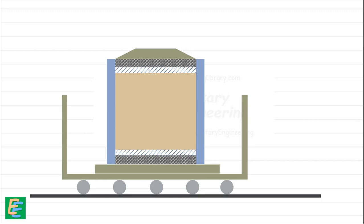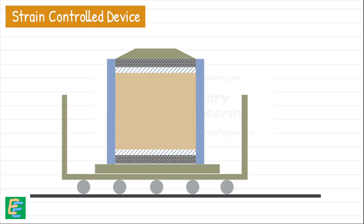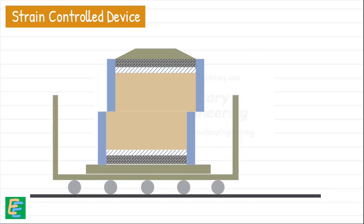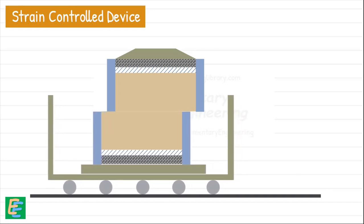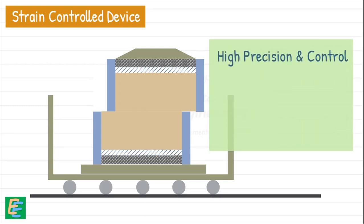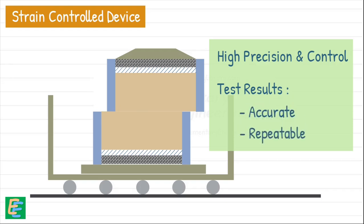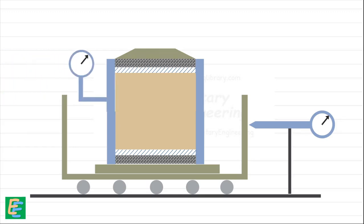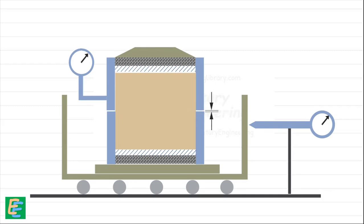The container can be pushed forward at a constant rate by a geared jack. This setup acts as a strain-controlled device, which applies deformation at a constant rate so the soil sample is sheared at a consistent speed throughout the test, offering high precision and repeatability. We track the shear displacement with a dial gauge fitted to the container. To measure the shear force on the soil sample, a proving ring is attached to the system. The upper part of the shear box is lifted to create a small gap between the two halves — usually kept at about 1 mm.